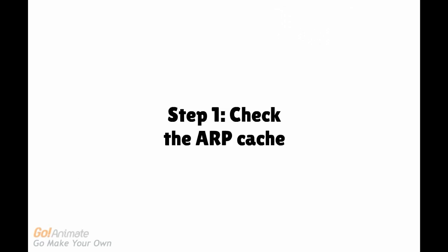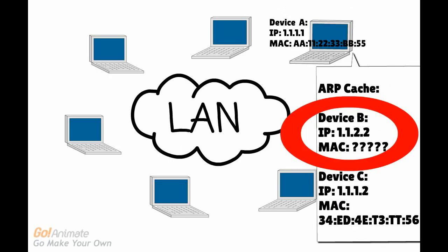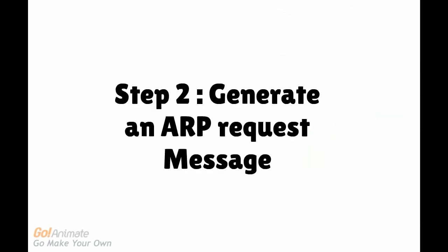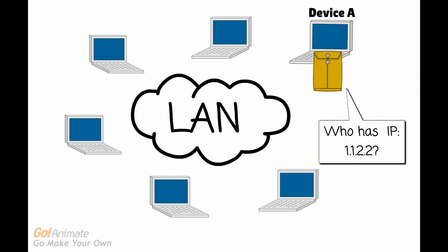The first step of ARP is for the source device — in this case, device A — to check its cache to make sure it doesn't already have the corresponding MAC address of the IP address it wants to send a message to. In step 2, the source device, device A, will generate an ARP request message. In this message, device A will include both its IP address and MAC address. It will also include the destination's IP address, but will not include the MAC address since that's what it's looking for.